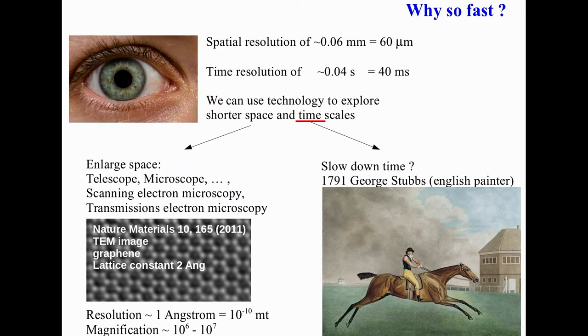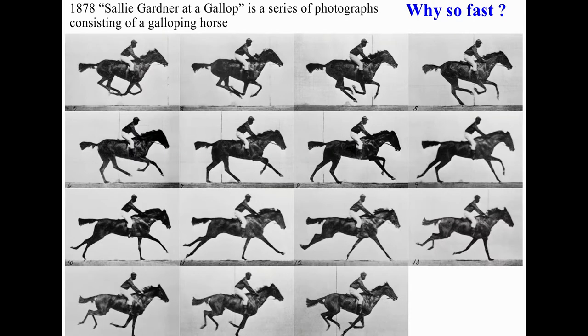I start with a portrait from 1791 representing a man on a horse which is running. In this portrait the horse is pictured as floating over the ground. This is the way the painter imagined the horse running because you couldn't actually see how the horse is running, since we cannot resolve with our eye the horse running at full speed.